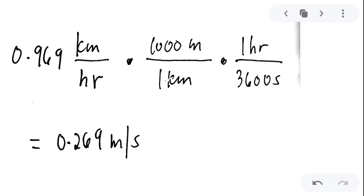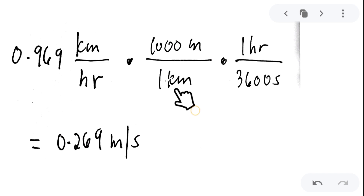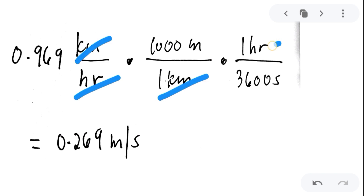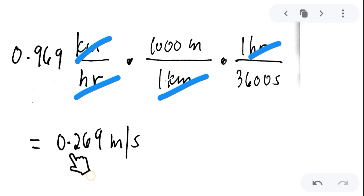To express the answer in meters per second, we convert 0.969 kilometers per hour. To eliminate the kilometer unit, we multiply by 1,000 meters over 1 km. To eliminate the hour unit, we multiply by 1 hour over 3,600 seconds. Canceling the units, the operation is 0.969 times 1,000 over 3,600, which gives 0.269 meters per second. That is the answer to the sample problems on velocity.